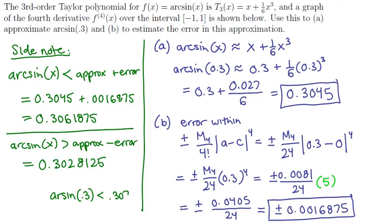Therefore, the arcsin of 0.3 is smaller than our upper estimate, which is approximately 0.307, and larger than our lower estimate, which is approximately 0.302. So we have a range of values.